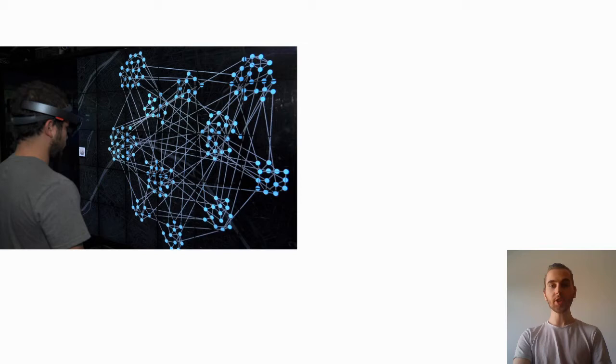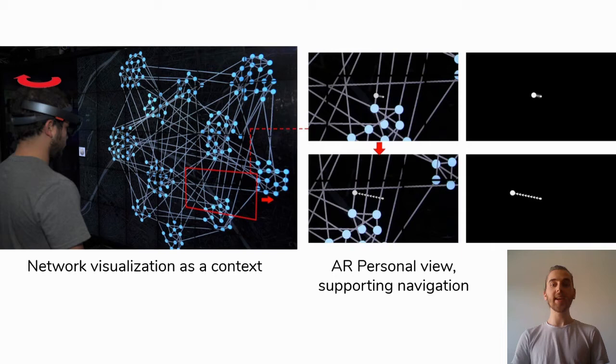To aid navigation, we created a set of AR cursors that exist only in the headset but are tied to the network on the large display. Let's see an example. On the left, you can see the network shown on the large display with a user in front of it wearing a headset. In the middle, we can see the picture of the combined view of the large display and the AR cursors, while on the far right, you see the content displayed only in the AR view.